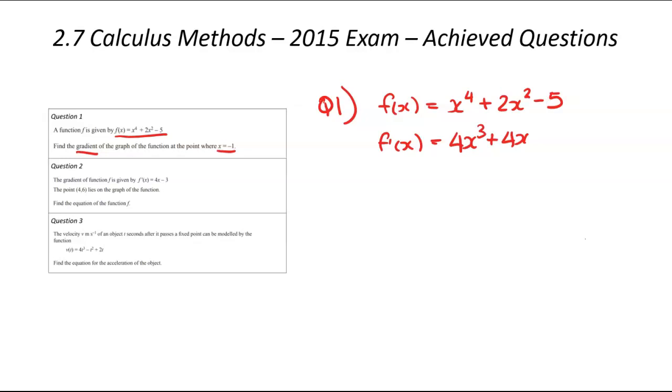The gradient function will let us figure out the gradient at any point. We've been told x equals minus 1. So we're going to go f'(-1) = 4(-1)³ + 4(-1). So minus 1 times minus 1 times minus 1 is minus 1, and then minus 1 times that 4 is going to be negative 4. Same here, we've got 4 times minus 1, that's going to be another minus 4.